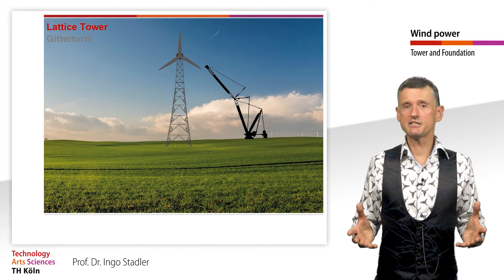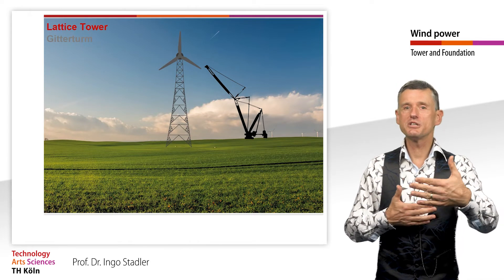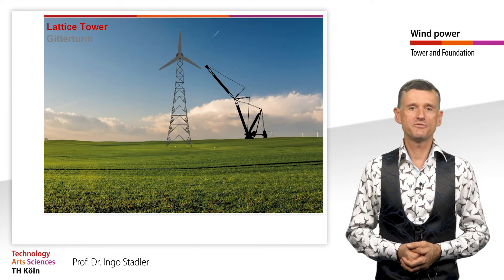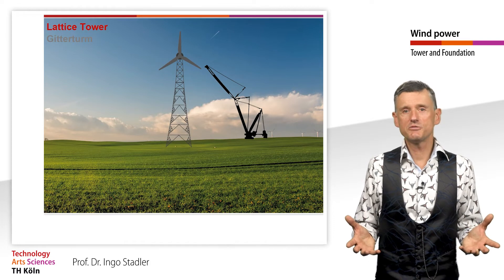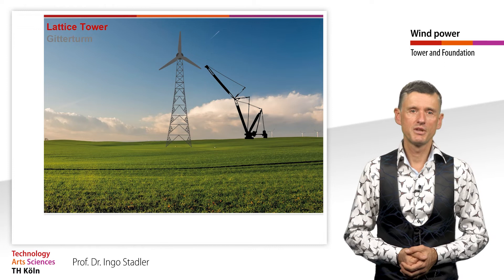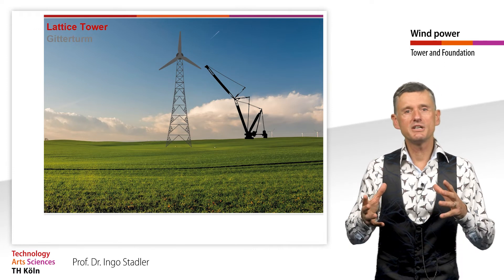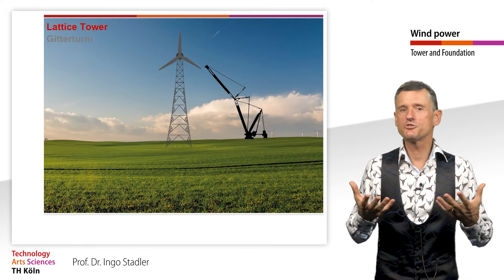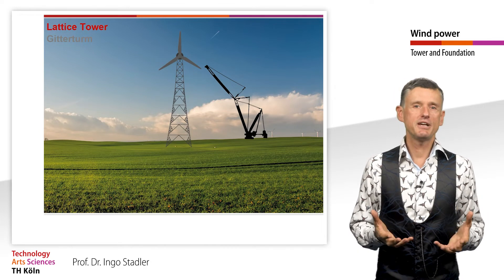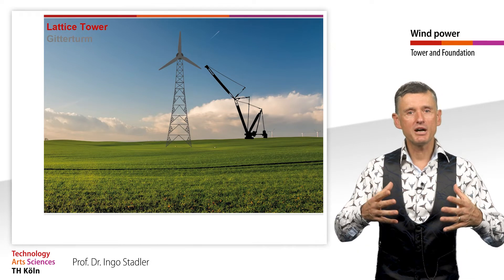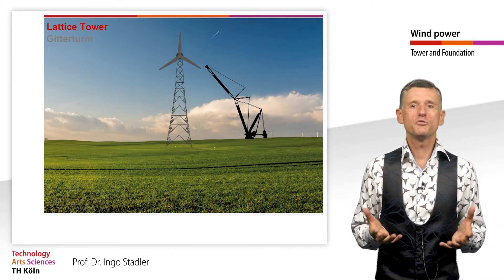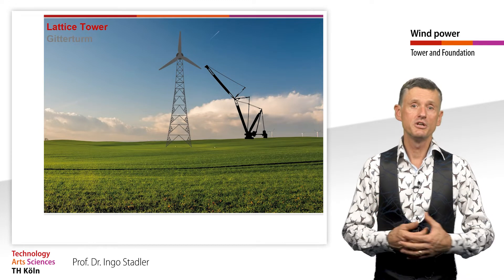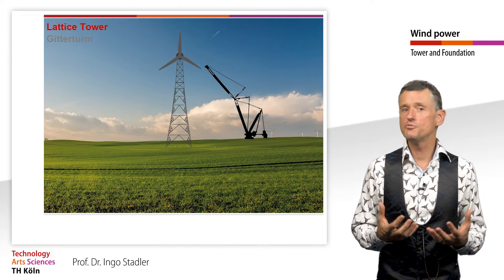The disadvantages of lattice towers are the considerably longer assembly time and the higher maintenance costs. The effect on the landscape is also different. Seen from close up, lattice towers do not look very appealing to most people. From a greater distance, however, the filigree lattice structure appears much more transparent and begins to visually dissolve against the background. Light reflection, which is stronger in closed steel pipes, also plays a role. Proponents of lattice towers consider the visual effect from a greater distance to be less of a burden on the landscape than the more prominent tubular towers.